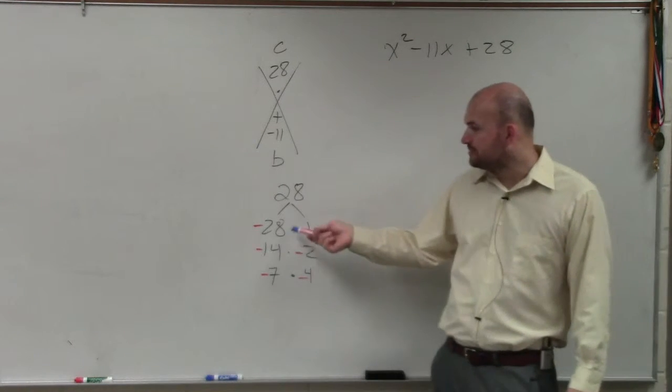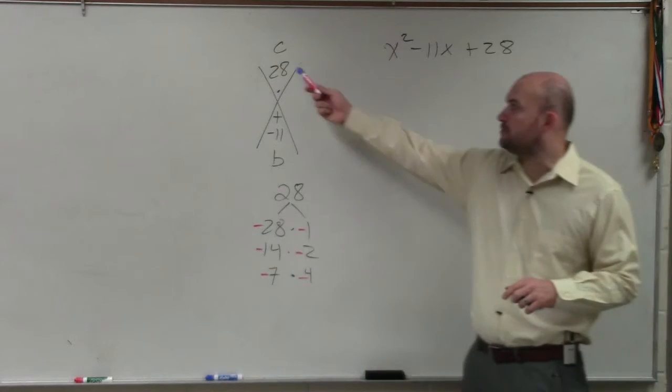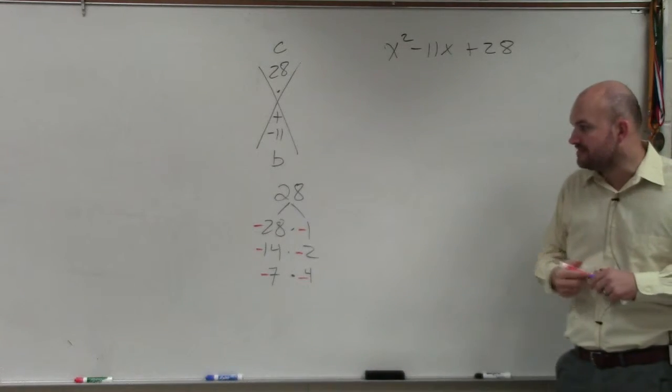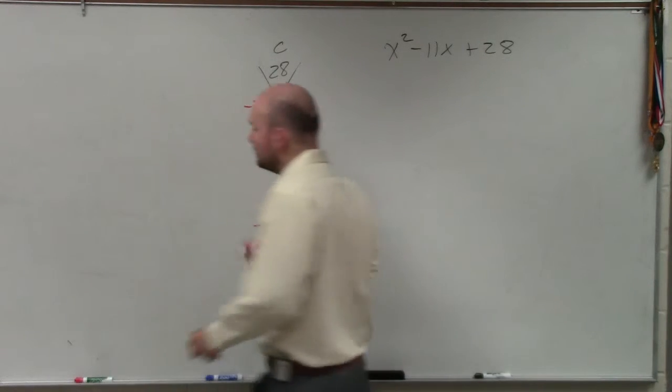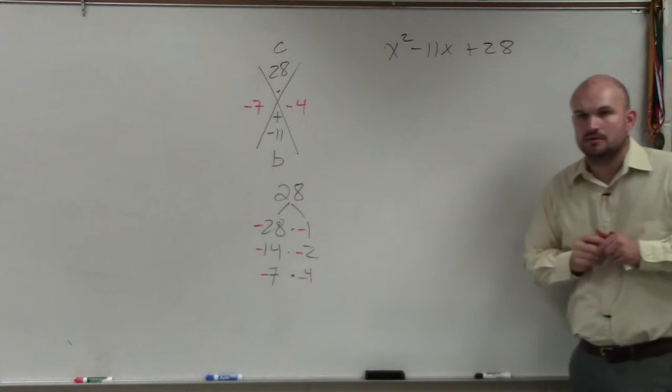So now, all I'm simply doing is trying to determine what two numbers multiply to give me 28, and add to give me negative 11. Well, you guys can see the only answer there is negative 7 and negative 4, correct?